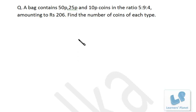Now a problem based on ratio and proportion. A bag contains 50p, 25p, and 10p coins in the ratio 5:9:4, amounting to Rs 206. We have to find out the number of coins of each type. A very simple problem.